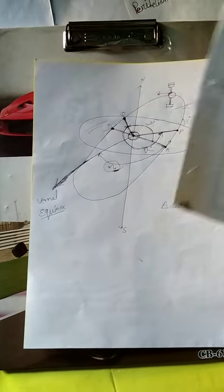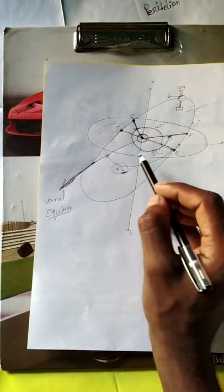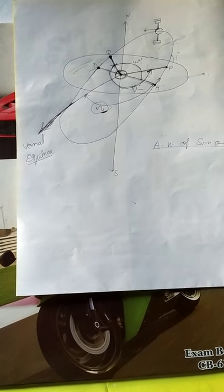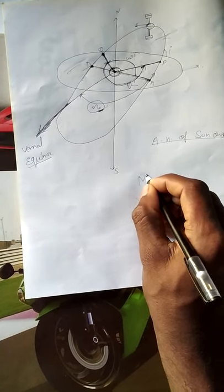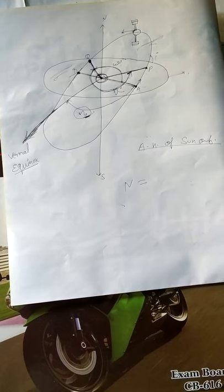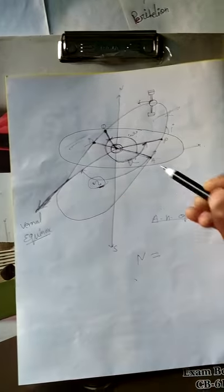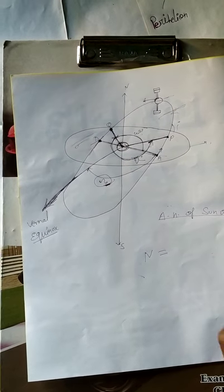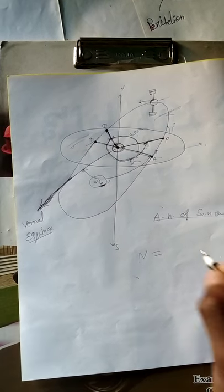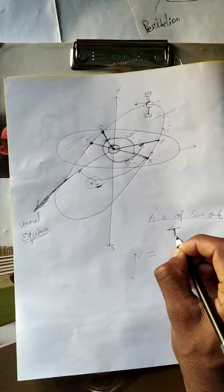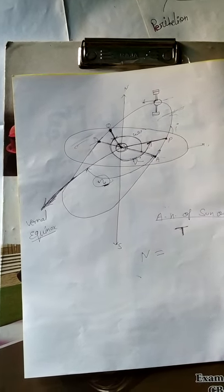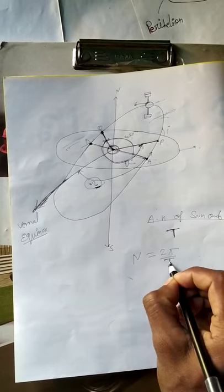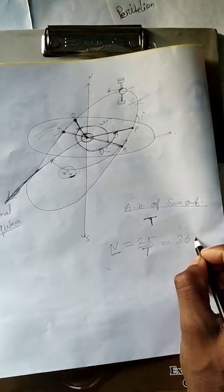V is known as the true anomaly, which shows the satellite's position in its orbit. Mean motion, denoted by n, is the angular speed required for the satellite to complete one revolution. Orbital period, denoted by T, is the time for the satellite to complete one full revolution. The formula for mean motion n is 2π divided by T, or equivalently 360 degrees divided by T.